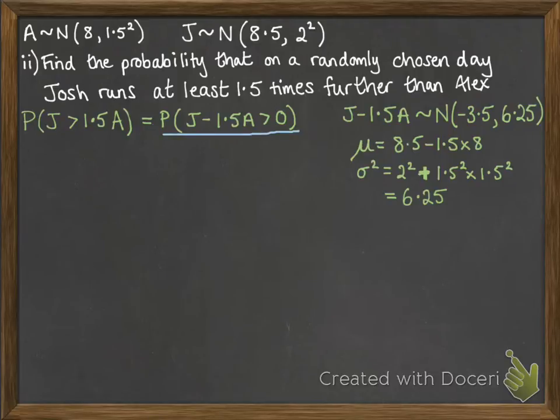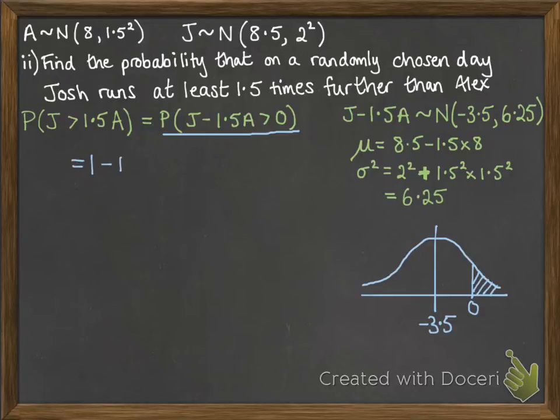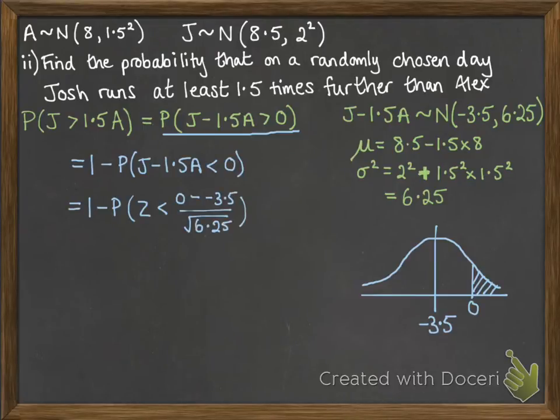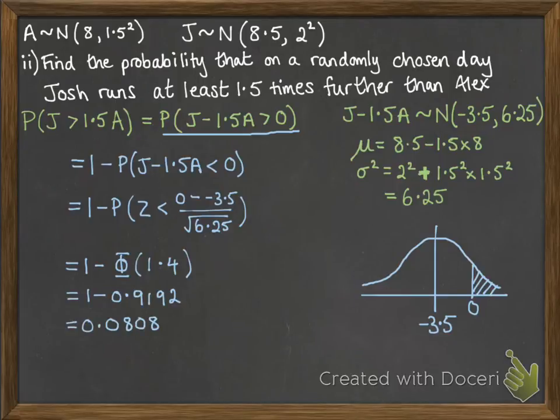So then continuing on with that, we're now looking for the probability that we get a number that's greater than 0. We've got this distribution. We're looking for more than 0. So that's the same as 1 minus the probability that J minus 1.5A is less than 0. So that's 1 minus the probability that Z is less than that number. 1 minus phi of 1.4. So that is giving us a final answer of 0.0808.